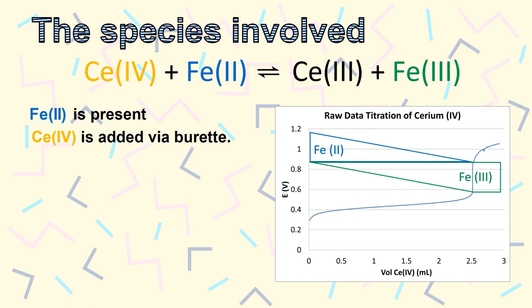The cerium(IV) reacts with the iron(II) to produce cerium(III). Note that after the equivalence point, there's no more iron(II) for cerium(IV) to react with, so it starts to accumulate.